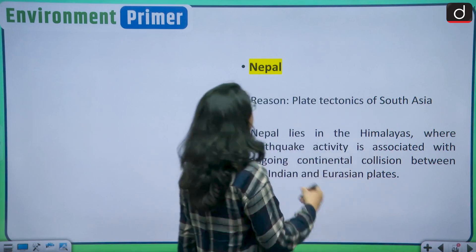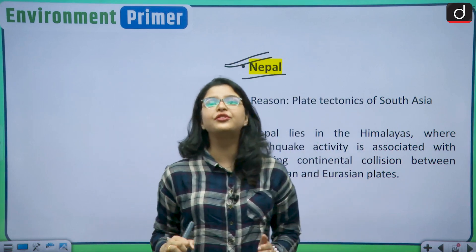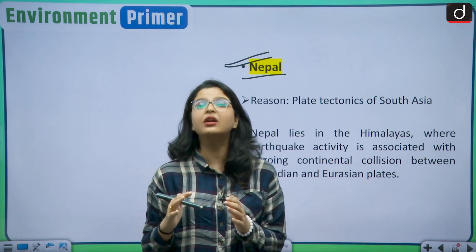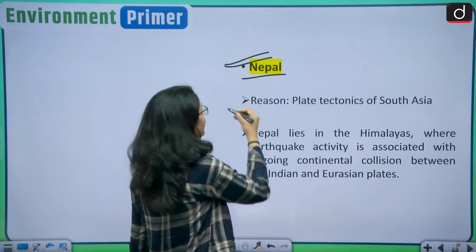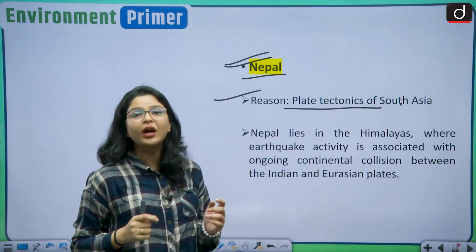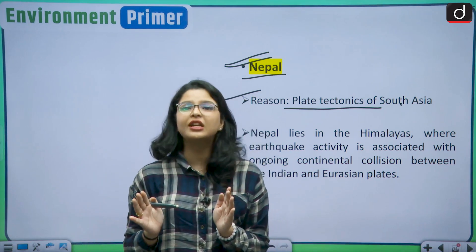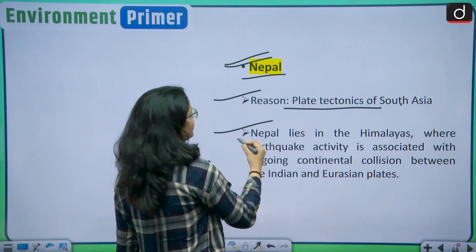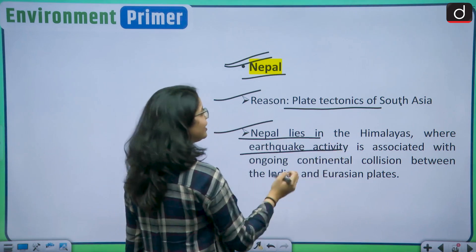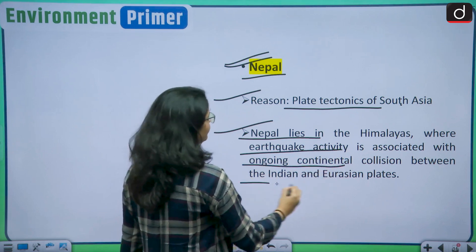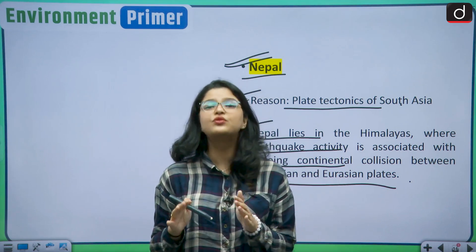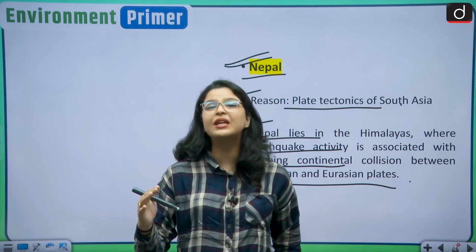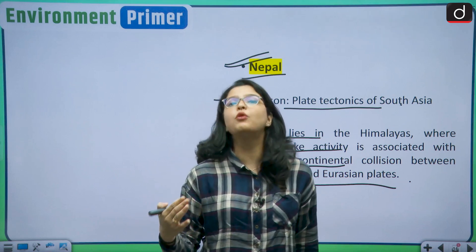Nepal suffered a serious earthquake in November 2023 as well. Nepal lies in the Himalayas where earthquake activity is associated with the ongoing continental collision between the Indian and the Eurasian plates. The Himalayan region is a very seismically active zone, and since Nepal falls within this region, earthquakes are more frequent there. The major cause of any earthquake is the plate tectonics theory.